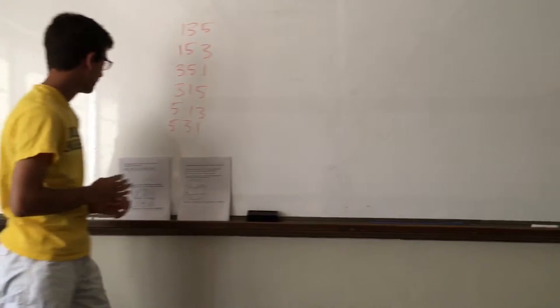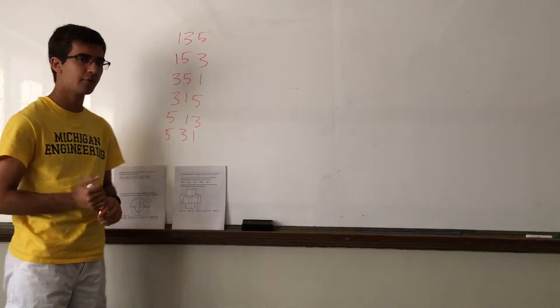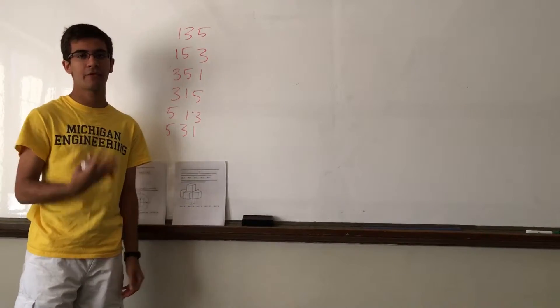Hello. So here, we're told that a three-digit integer contains one of each of the digits 1, 3, and 5, and we want the probability that the integer is divisible by 5.